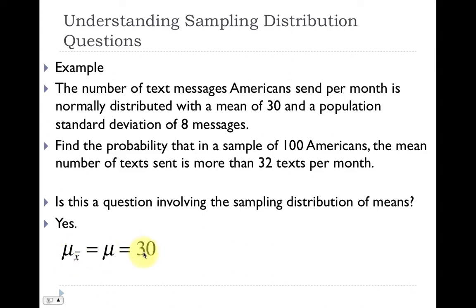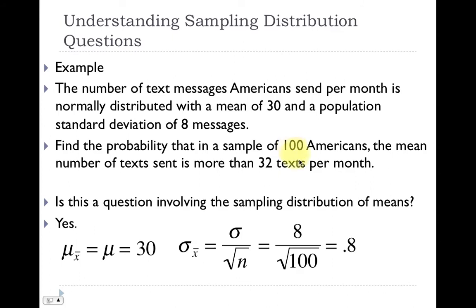We also have to figure out the standard error, because when we use normal CDF on our calculator, we need the standard error. We plug in sigma divided by the square root of n. Sigma is 8 and n is 100, so we get 8 divided by the square root of 100, which equals 0.8. Eight divided by 10 is 0.8. So our mean is 30 and our standard error is 0.8.